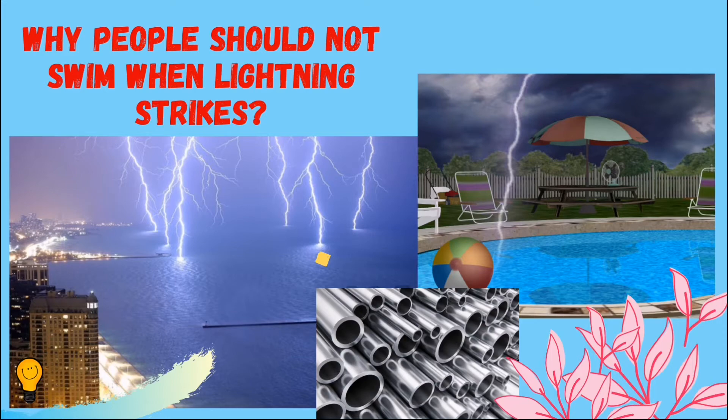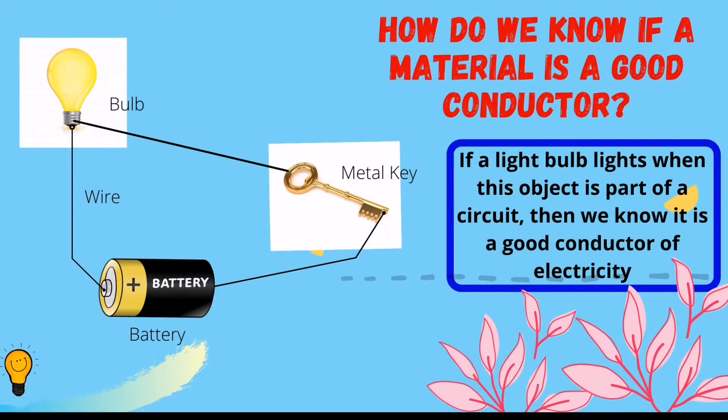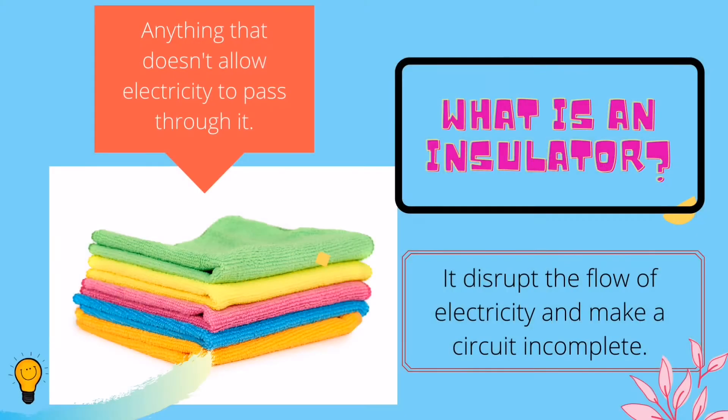Water and damp air are also conductors of electricity, but not as strong as metals — hence water allows electricity to flow through it. This is why people should not swim when lightning strikes. One way to test if an object is a good conductor is to use an open circuit: if a bulb lights when the object is part of a circuit, then we know it is a good conductor of electricity.